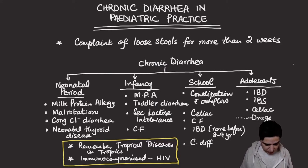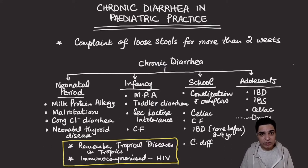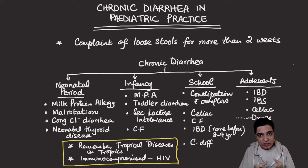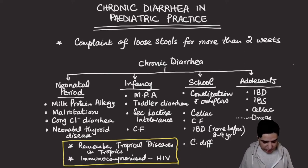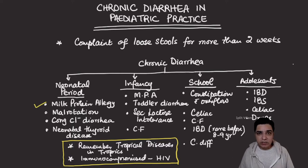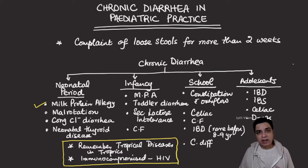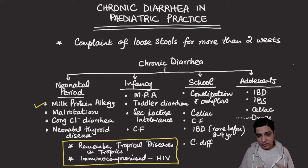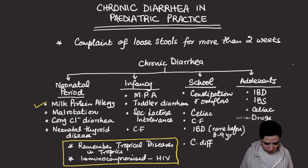Starting with the neonatal group: if a child who is three or four weeks of age is brought in with loose stools lasting more than two weeks, the most common cause is cow milk protein allergy. This is an allergic disorder in which antibodies are formed against milk proteins, and that antigen-antibody reaction damages the gut epithelium, leading to chronic diarrhea as long as the neonate remains on milk.